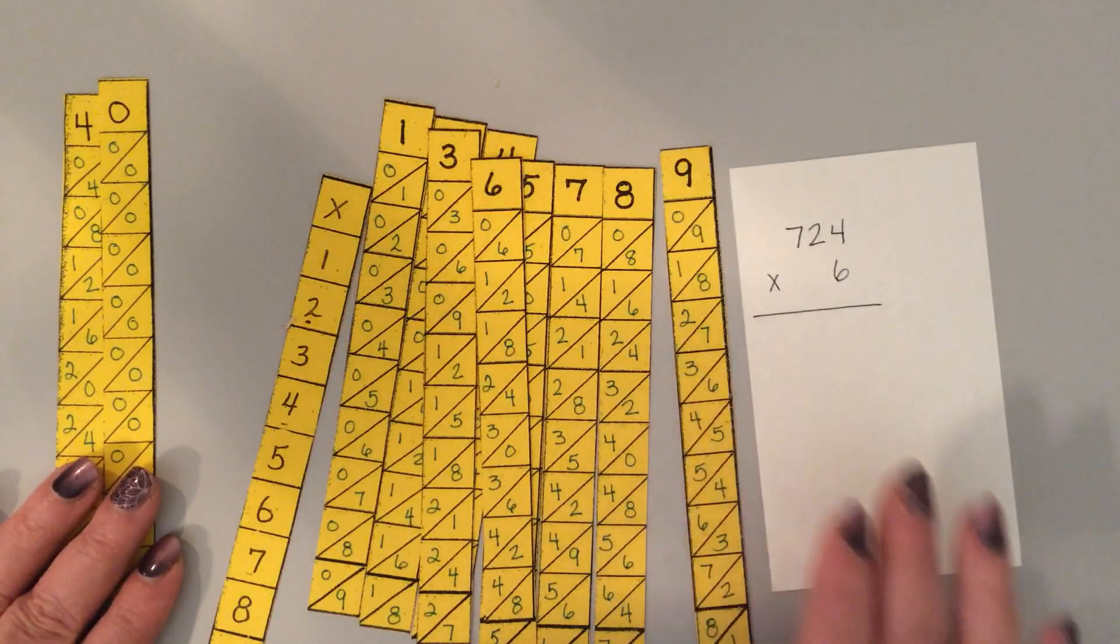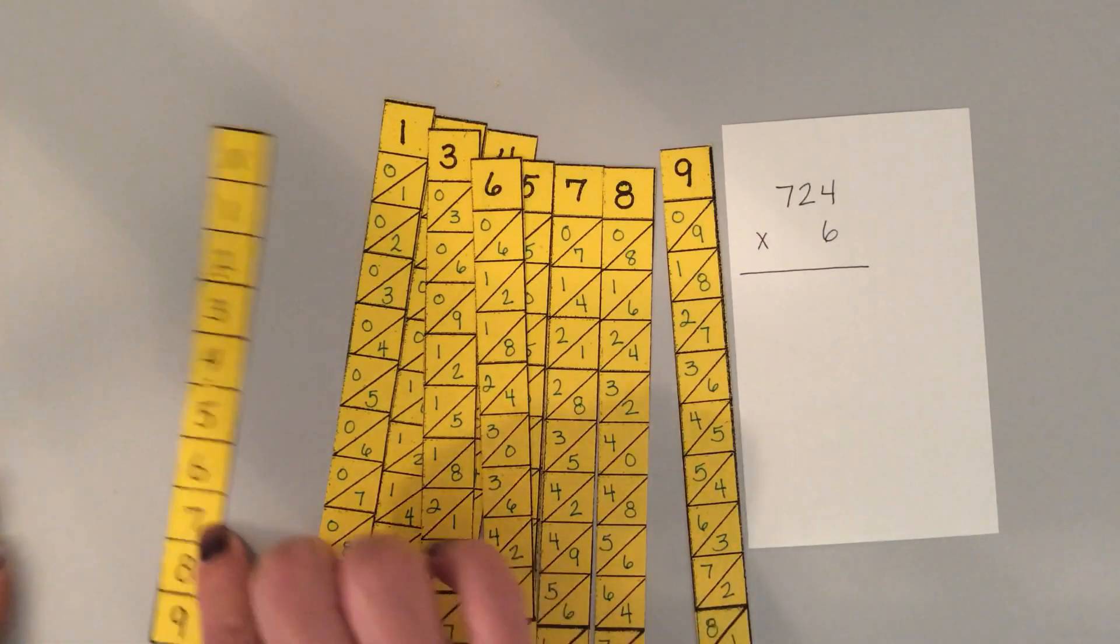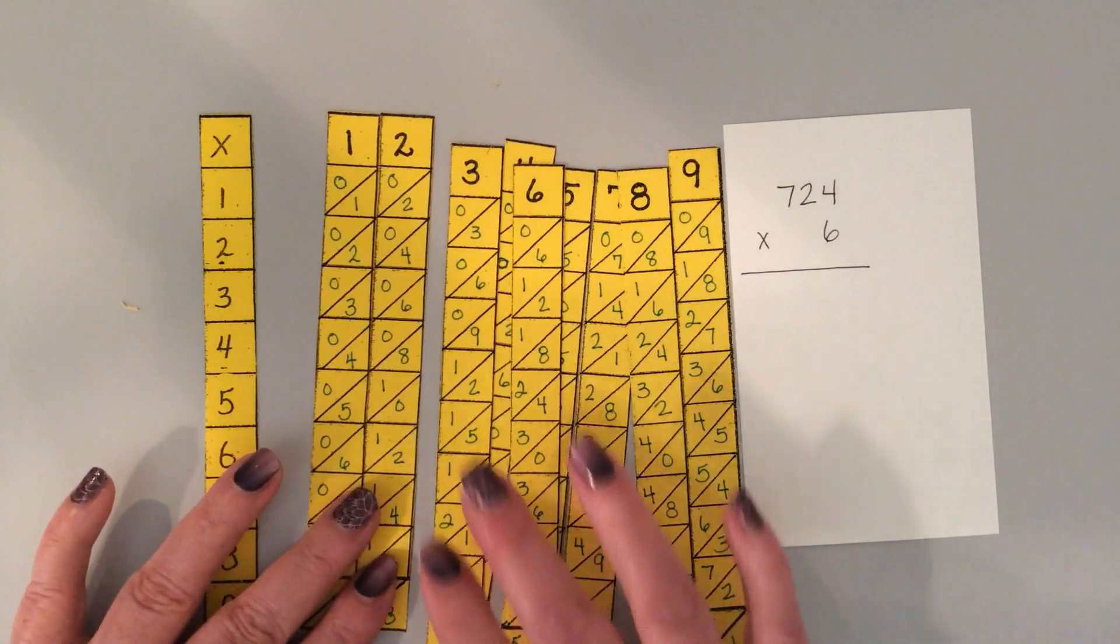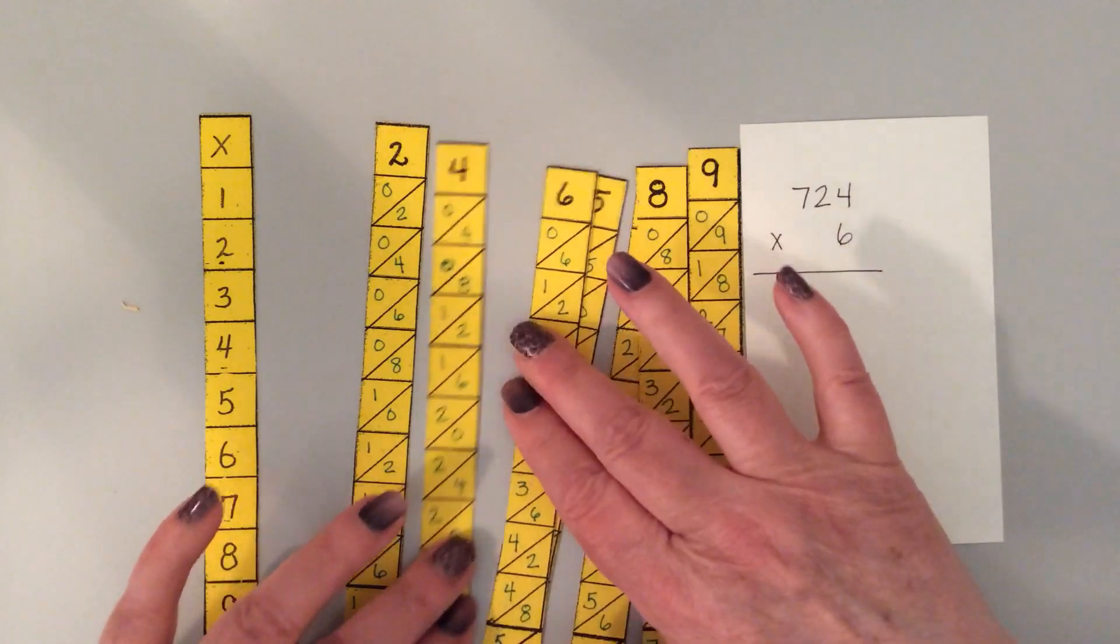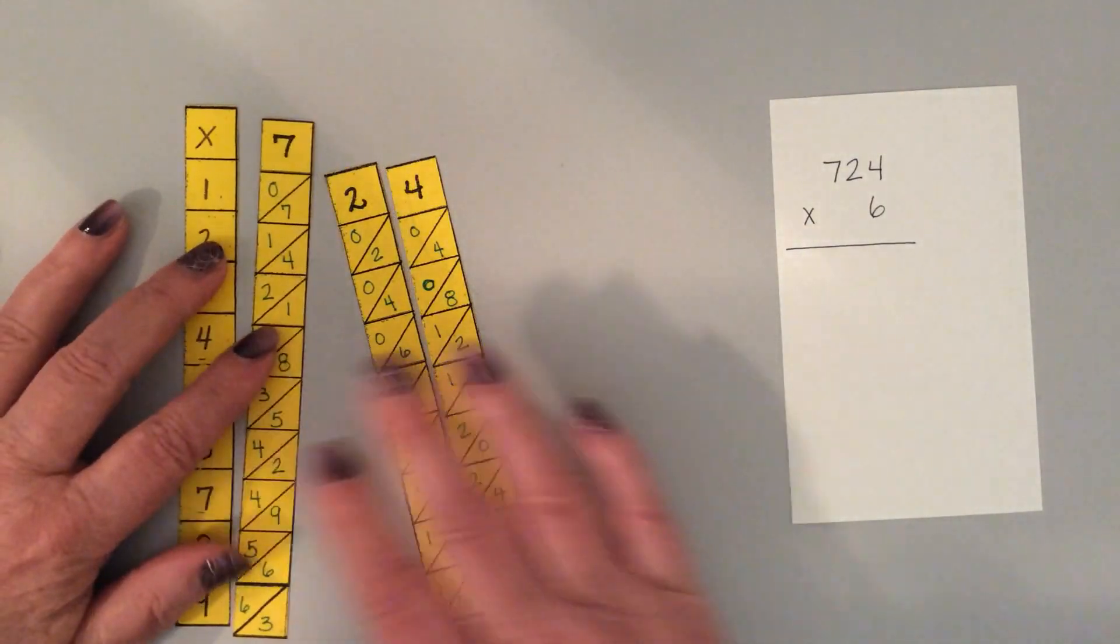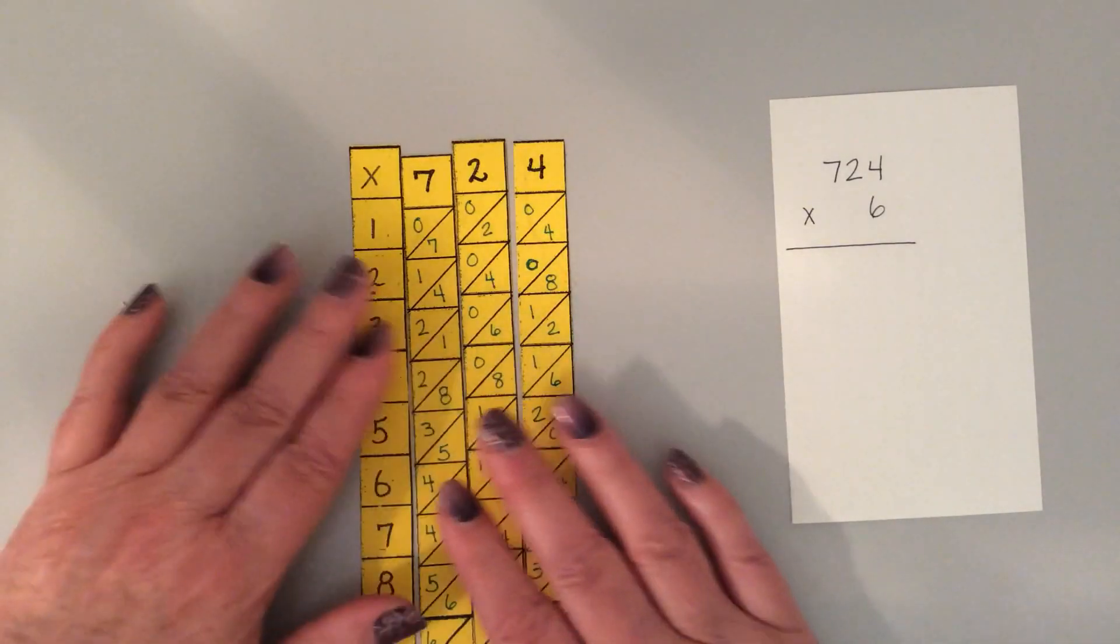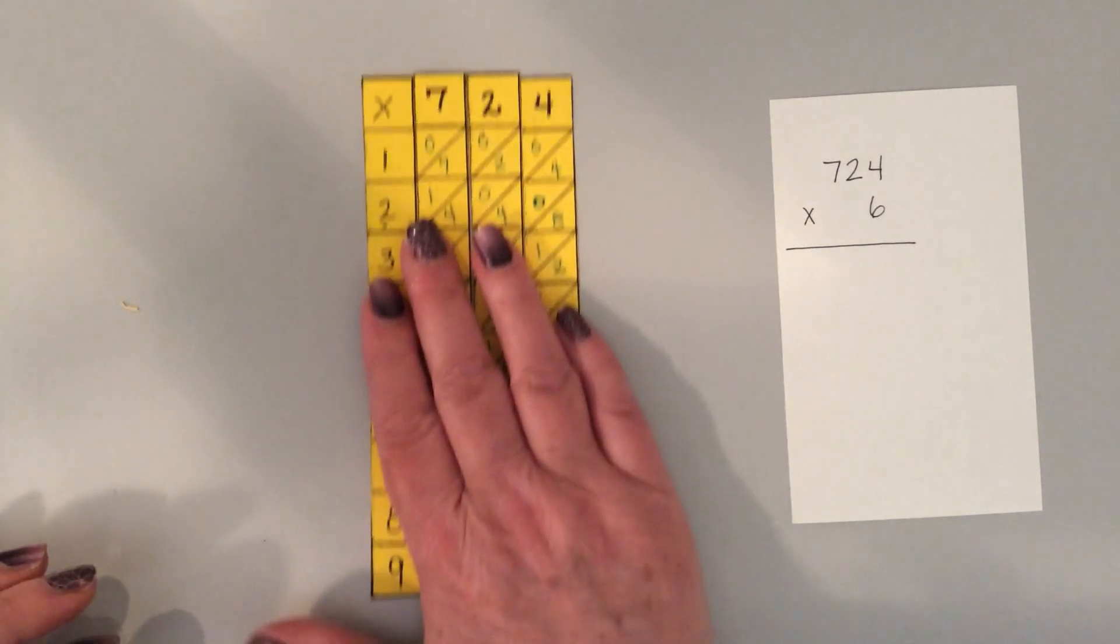If we wanted to solve 724 times 6, we're going to need our index bone, that's this one right here. Then I need 724, so I don't need the one, I need the four, and I need the seven. Here's the seven. So 724, and you set it up like this so it reads 724 there, and you line everything up pretty good.